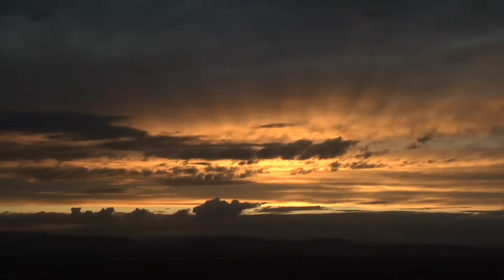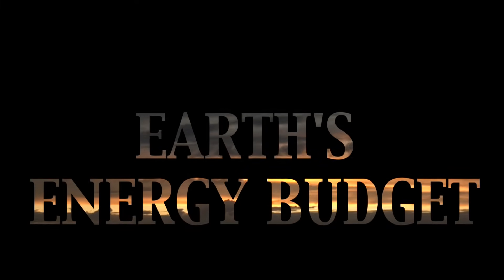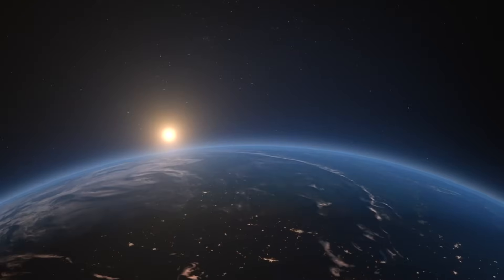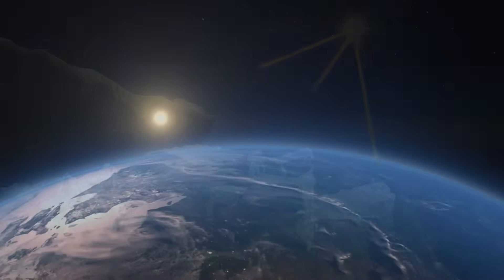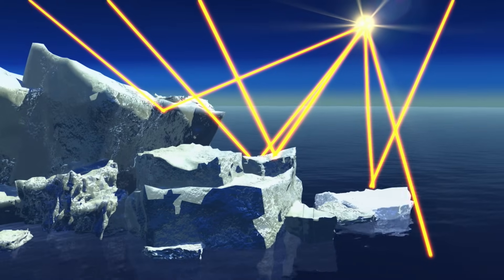How much stays and how much goes is a function of Earth's energy budget. Almost all of Earth's energy comes from the sun. As sunlight heats the planet, the planet changes.